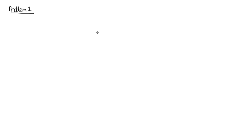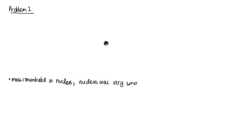Problem one. Rutherford's model of the atom told us that most of the mass of the atom was concentrated in the nucleus — mass concentrated in nucleus — and that the nucleus was very small and positive. And so because atoms were neutral, there were electrons somewhere on the outside, but most of the atom was empty space.